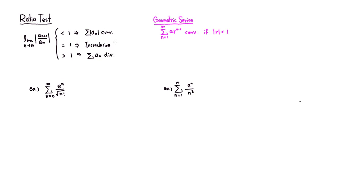And if this limit came out to be greater than 1, then we can conclude that the series is divergent. So that's the ratio test. Let's use the ratio test to determine whether the following series are convergent or divergent.